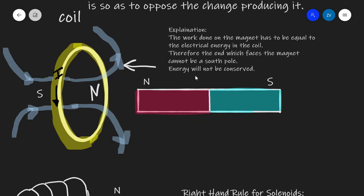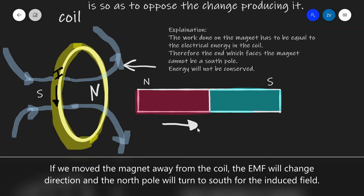So what will happen if we suddenly decide to move the magnet backwards? Well, if we're moving the magnet to the right, then we will need to oppose the change that's producing it. So this will need to be a south pole.